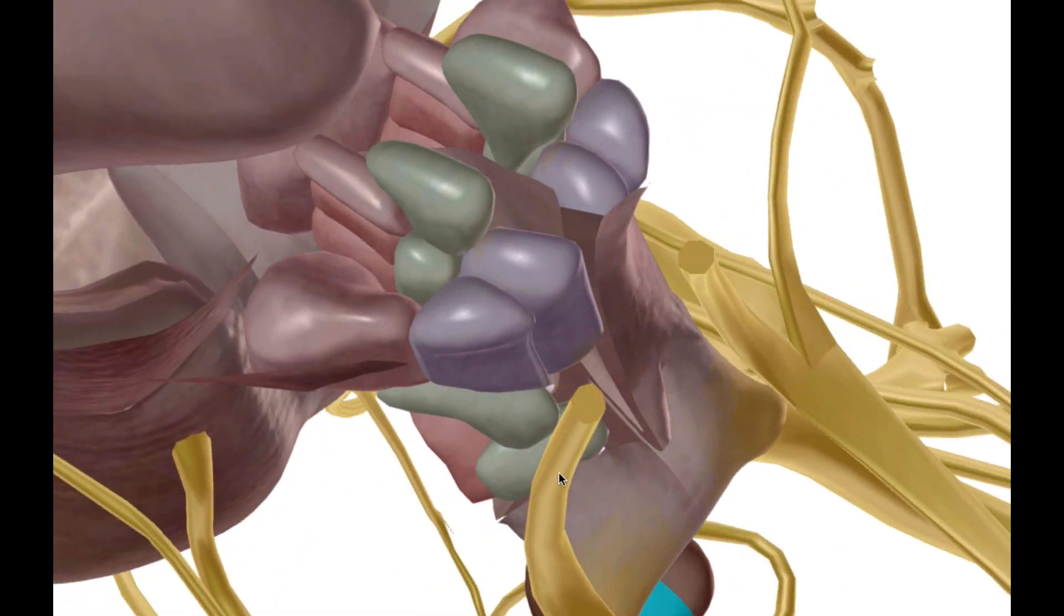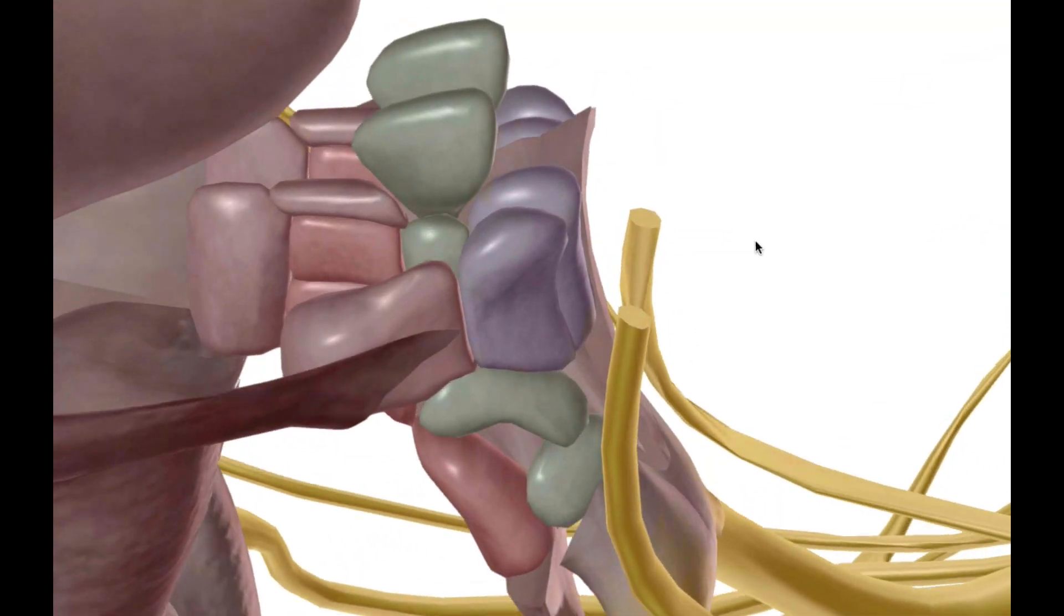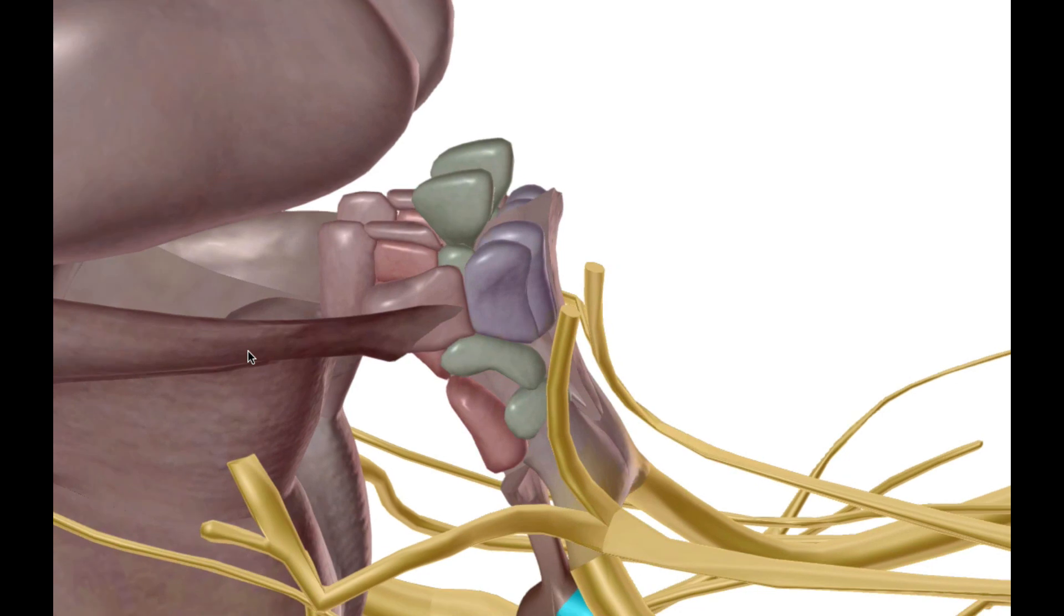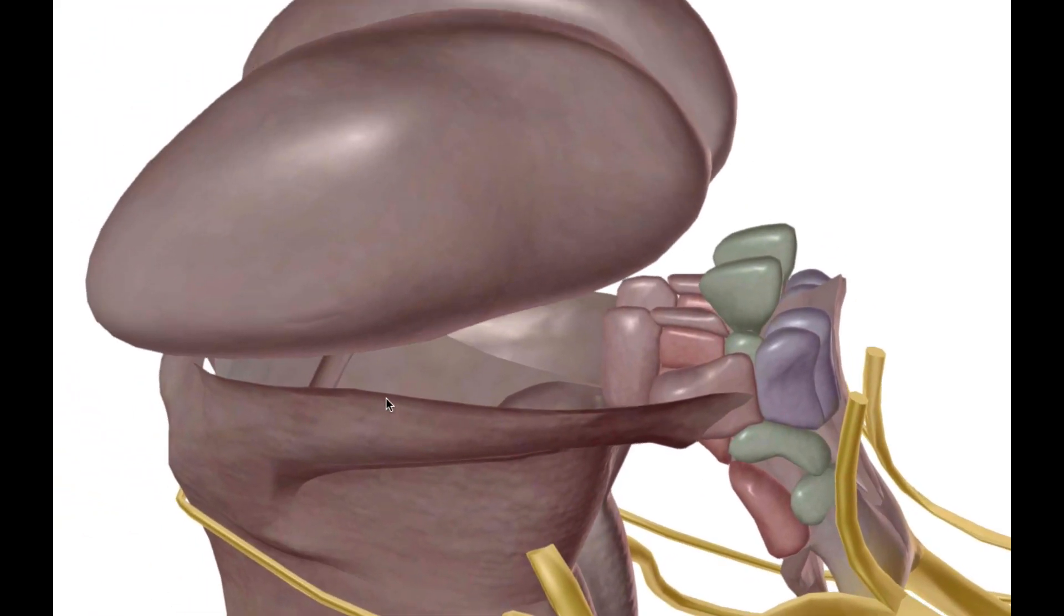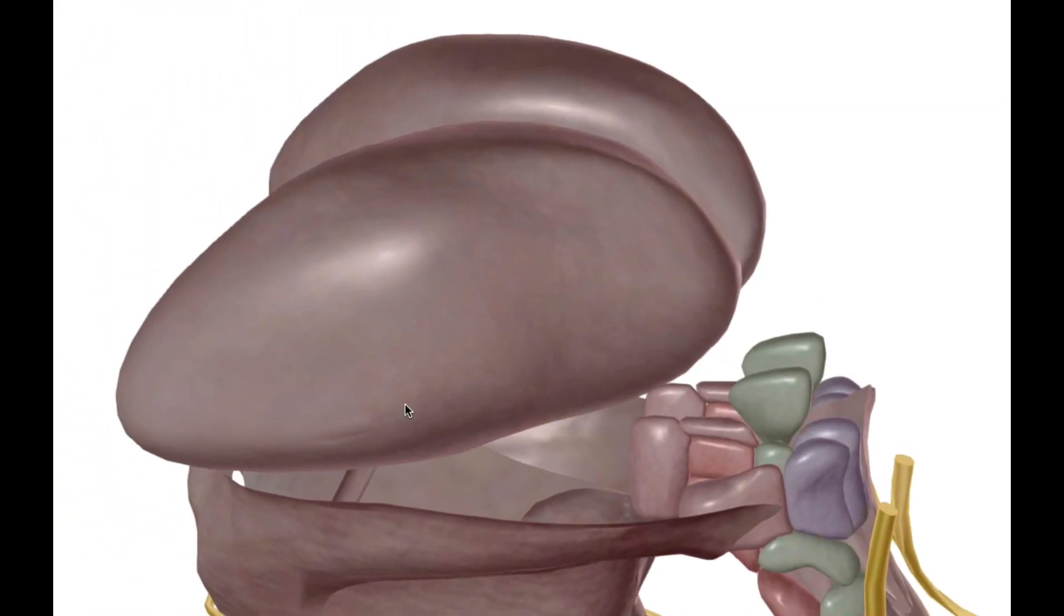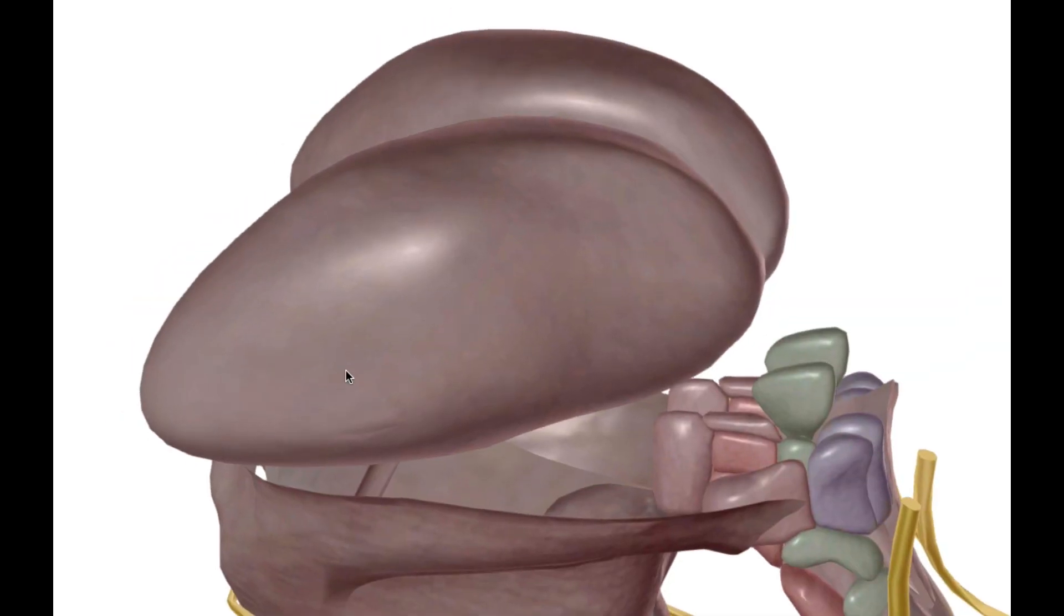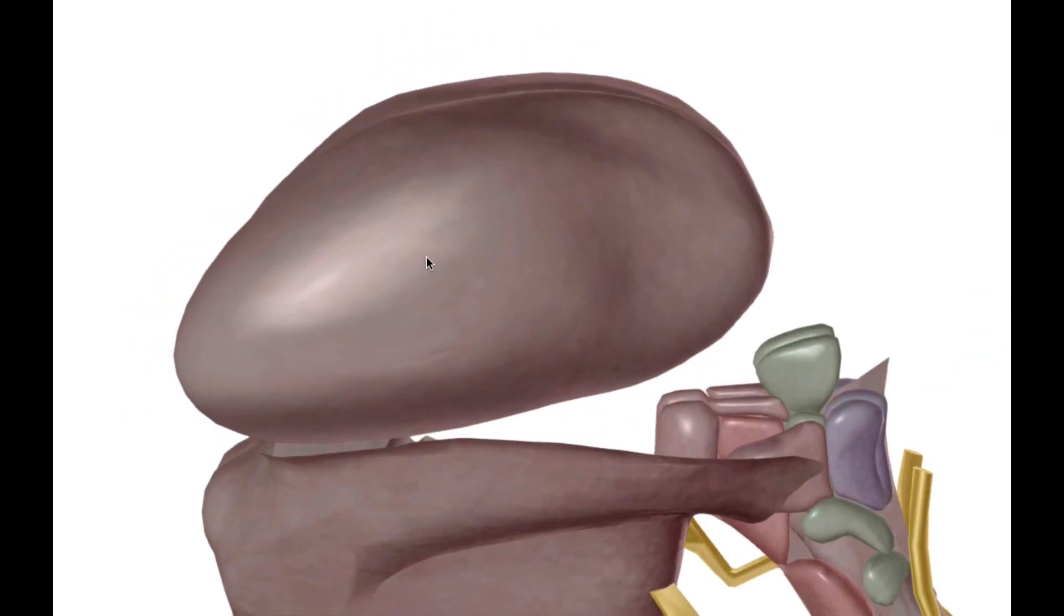As you can see here, there's a lot going on in the hypothalamus—a lot of nuclei, a lot of gray matter that produces hormones and such that help the body maintain homeostasis throughout the body.